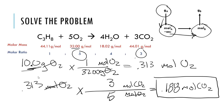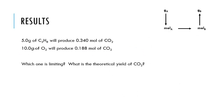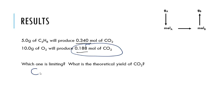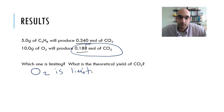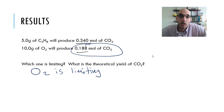So let's gather all our numbers. 5 grams of propane is going to produce 0.340 moles of CO2, and 10 grams of O2 is going to produce 0.188 moles of CO2. Which one is limiting the reaction? If we burn both, we can produce a lot of CO2 with the propane we've got, but we end up only getting 0.188 moles of CO2 — we've run out of oxygen well before we've run out of propane. Therefore, O2 is limiting. This is the maximum amount of CO2 this reaction can produce.